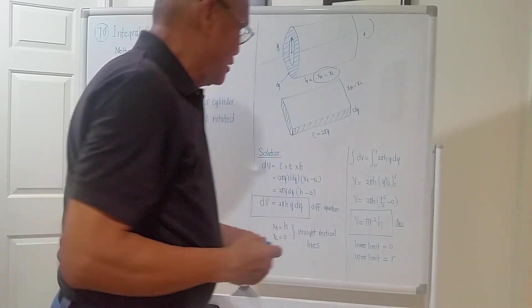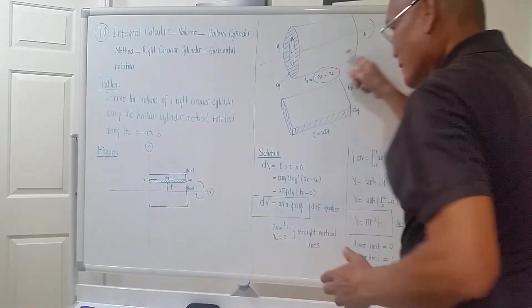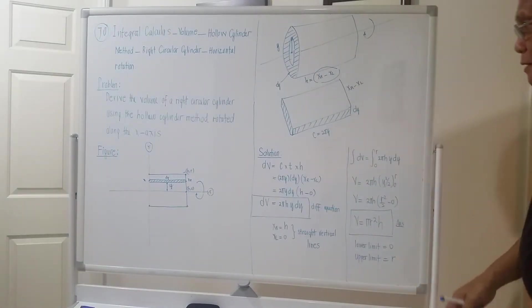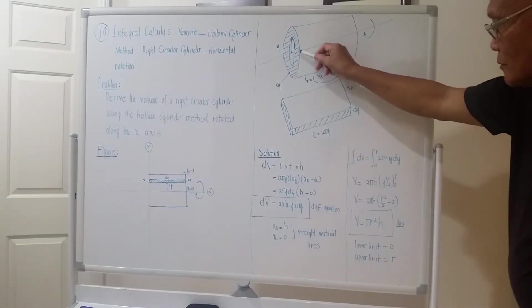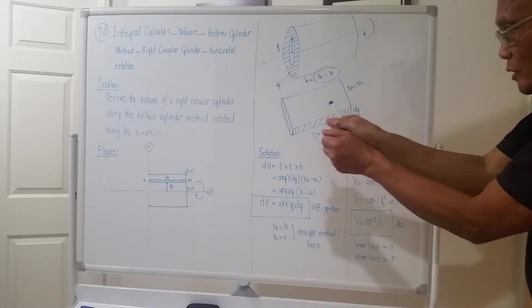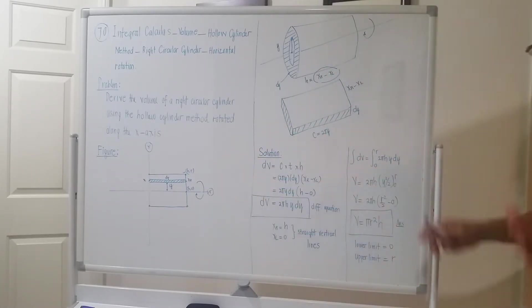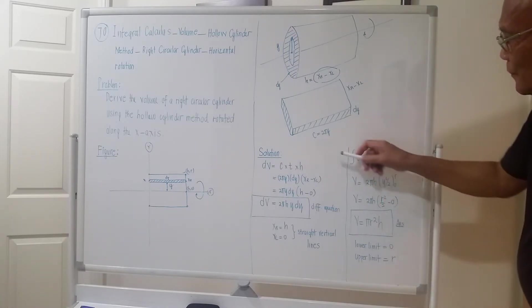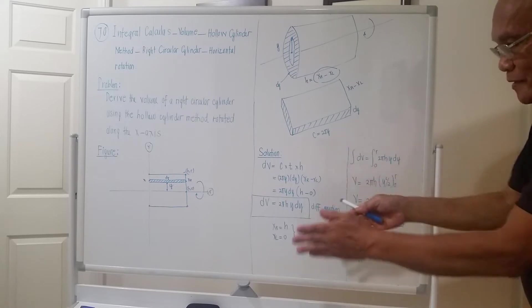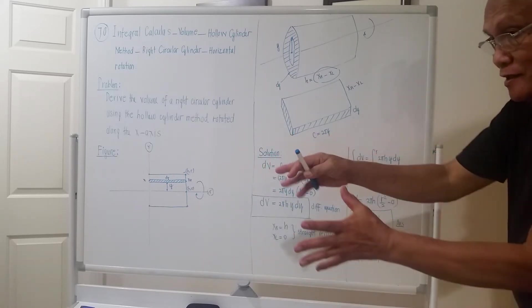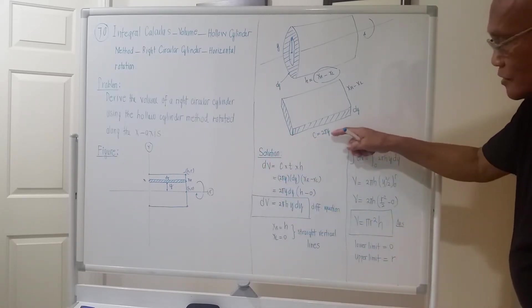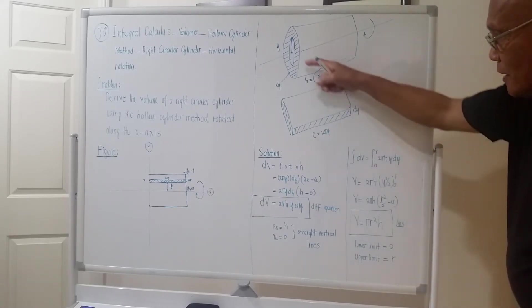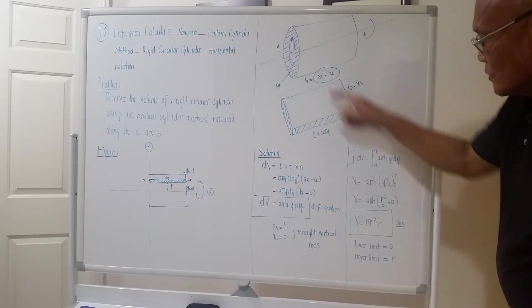This is a general statement: if it is a constant, no problem; if it is a variable, no problem — just follow this. If we try to cut and spread out the hollow cylinder, the resulting configuration will be like this. This length here will be the circumference of the hollow cylinder, which is 2πy — two pi times its radius y.